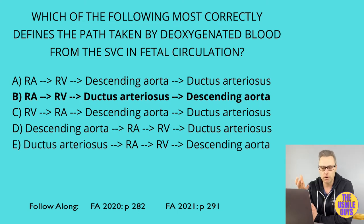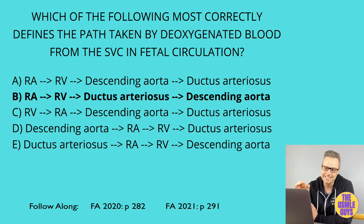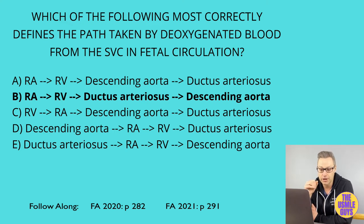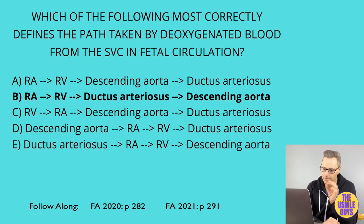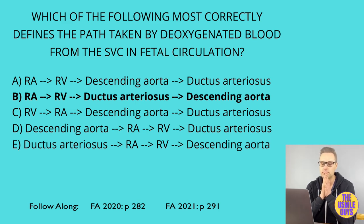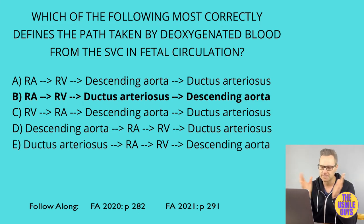When a baby is born and takes its first breath, we immediately get a decrease in resistance in the pulmonary vasculature. This increases the left atrial pressure compared to the right atrial pressure, and this will close the foramen ovale. An increase in oxygen and a drop in prostaglandins — the result of placental separation — leads to closure of the ductus arteriosus. Remember: if we need to close the PDA, we use indomethacin. If we want to keep it open, we use prostaglandins.